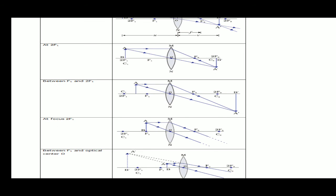Third case: when the object is at 2f1. Two rays — one parallel to the principal axis will pass through focus, and one passing through the optical center will go straight. They will intersect at 2f2.